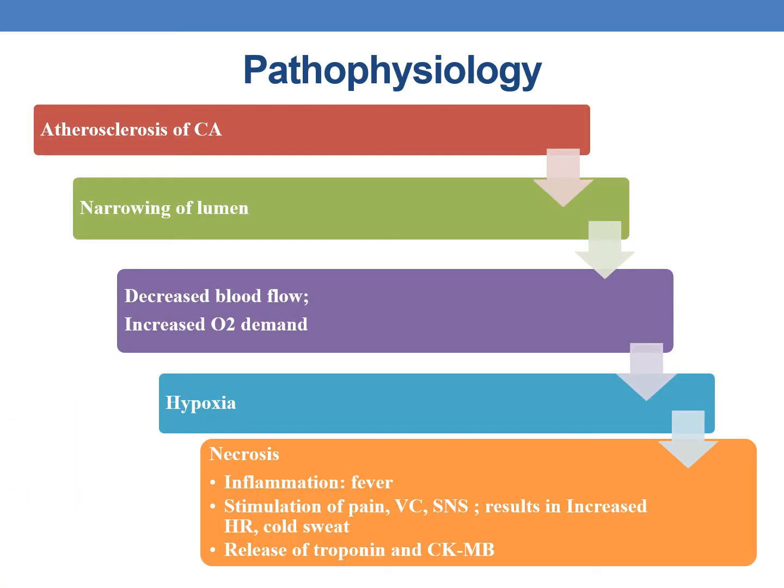In the pathophysiology, the first step is atherosclerosis of the coronary artery, leading to narrowing of the lumen, decreased blood flow, and increased oxygen demand, which leads to hypoxia in the myocardium and finally necrosis or cell death. This is characterized by inflammation, fever, stimulation of pain, the autonomic nervous system causing increased heart rate and cold sweats, and release of troponin and cytokines.